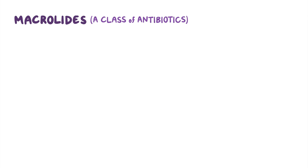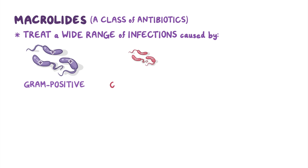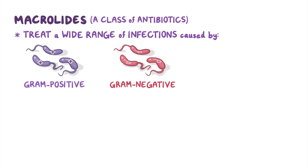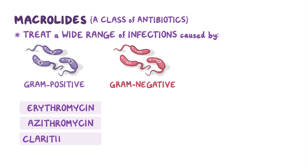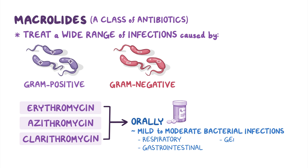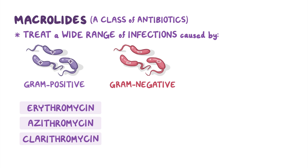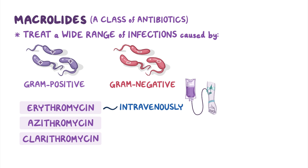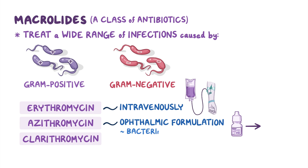Macrolides are a class of antibiotics used to treat a wide range of infections caused by gram-positive and gram-negative bacteria. These medications include erythromycin, azithromycin, and clarithromycin. All can be administered orally to treat mild to moderate bacterial infections of the respiratory, gastrointestinal, and genitourinary tracts. Erythromycin can also be given intravenously, and azithromycin has an ophthalmic formulation to treat bacterial conjunctivitis.